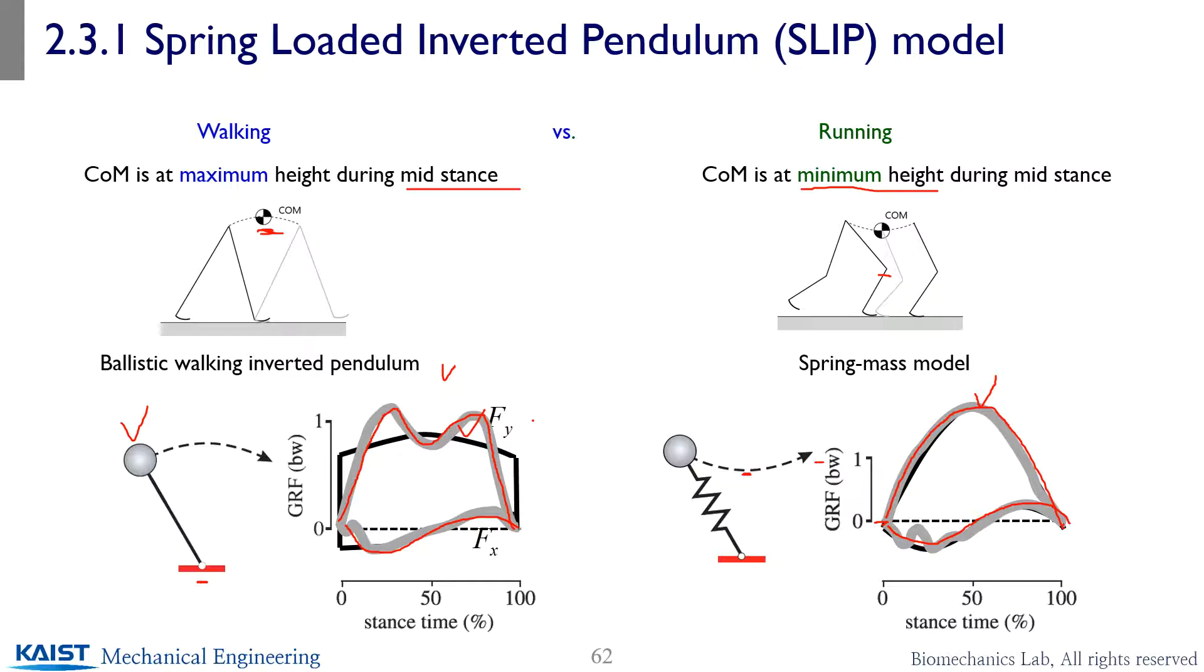So those three discrepancies can be explained by the model simplicity because we know that human walkings are very like a multiple segment and pretty complicated sensor feedback motion. But point mass passive inverted pendulum, it's a too simple model simplification may induce those differences.